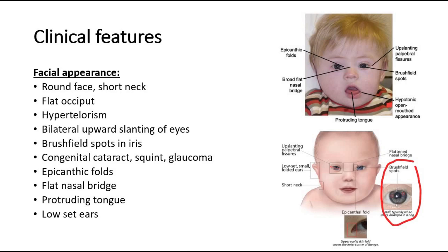Epicanthic folds can be seen, as shown in the pictures, where there is an upper eyelid skin fold covering the inner corner of the eye. Other facial features include a flat nasal bridge, a slightly protruding tongue, and low-set ears, where the earlobe is less than one-third below the imaginary intercanthal line.